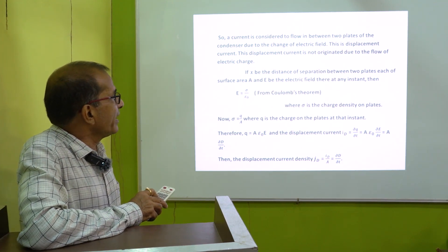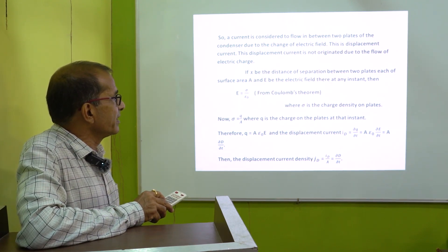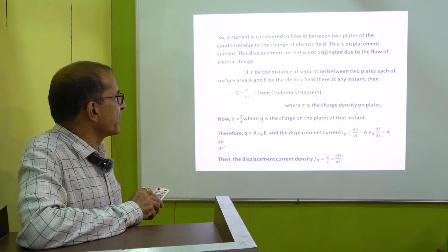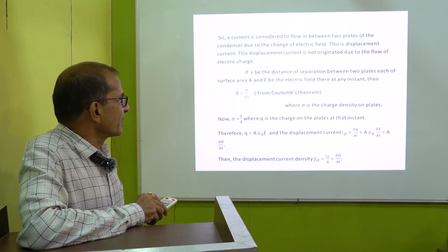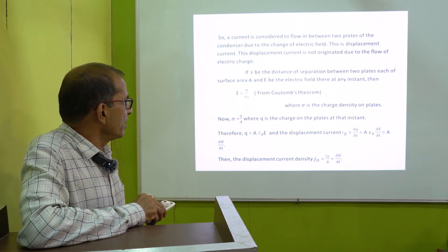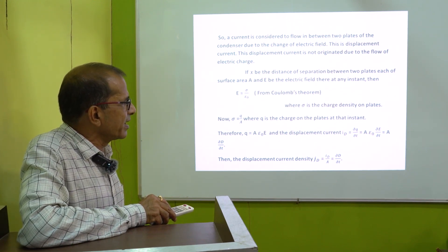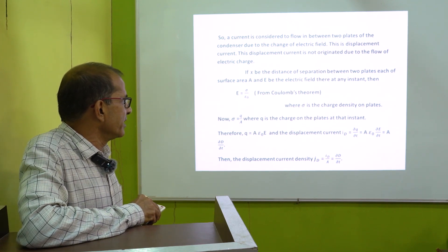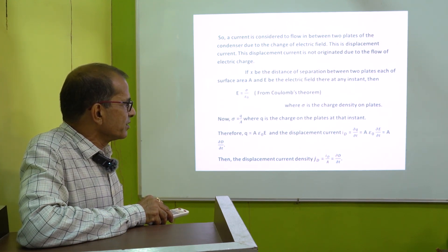If x is the distance of separation between the plates, A is the area of each plate, and E the electric field intensity at any instant, then from Coulomb's theorem E equal to σ/ε₀, where σ is the charge density on the plates. From this, Q equal to σA and σ equal to ε₀E, so Q equal to Aε₀E. Hence displacement current id equal to ∂Q/∂t equal to Aε₀ ∂E/∂t equal to A ∂D/∂t. The displacement current density jd equal to id/A equal to ∂D/∂t.